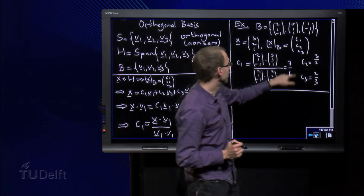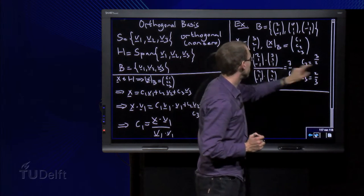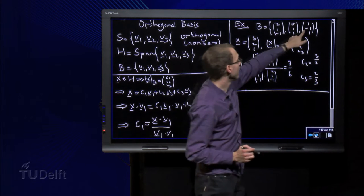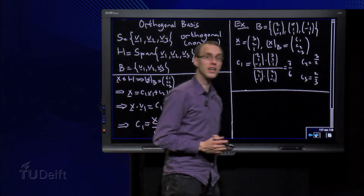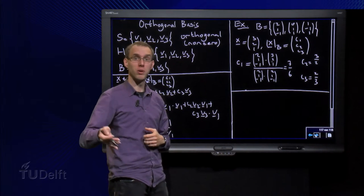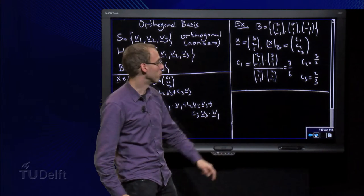And finally for c3 we have the inner product of these two. 3 minus 2 equals 1 plus 1 equals 2 divided by v3 in v3, 1 plus 1 plus 1 equals 3. So there we have our weights c1, c2 and c3 right away. We do not need to do any row reduction anymore here.